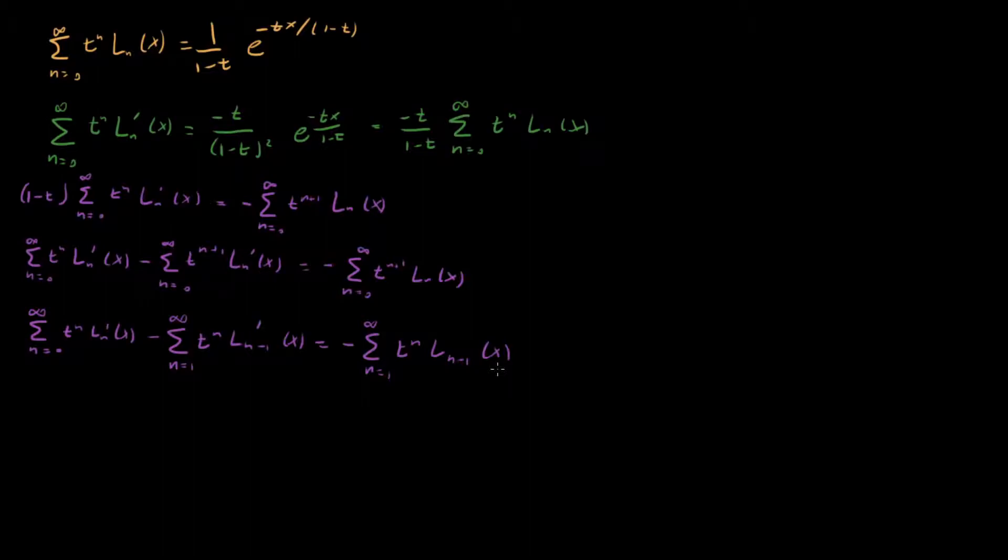Now that we have this, we can drop the sums, drop the t to the n's, because those are common to every term in the series. What we're left with is L_n prime of x minus L_(n-1) prime of x equal to minus L_(n-1) of x. And there's a very nice way of writing this, which is right over here in red. It's saying that L_n prime of x is equal to L_(n-1) prime of x minus L_(n-1) of x.